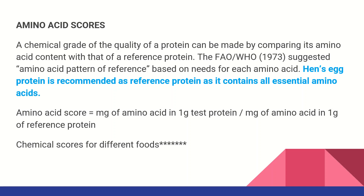FAO (1973) defined the reference protein for amino acid scoring. The score has to be evaluated against a reference. If you have eggs, chicken, or fish, you can use them as reference proteins. Using these values, you can calculate the amino acid score. Chemical scores are different for different foods.